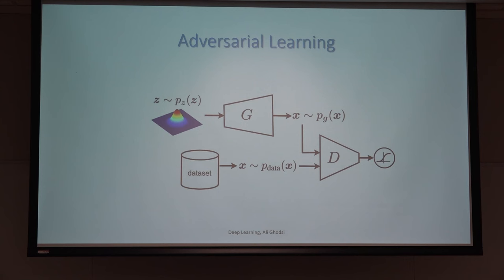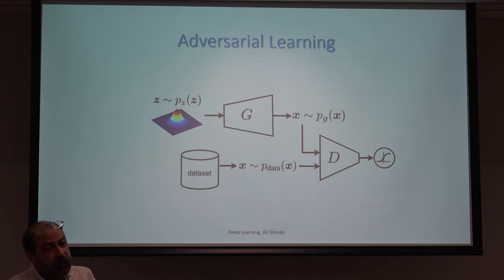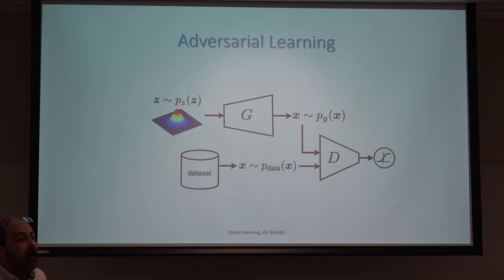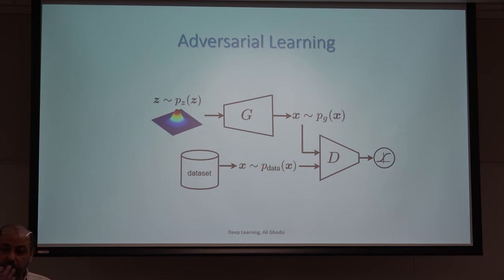Now we have to see how to train such a model. We have two parts competing with each other, which is different from before where we just minimized or maximized a single loss function. Before seeing the details of training, are there any questions? It's essential to understand what we're supposed to do.